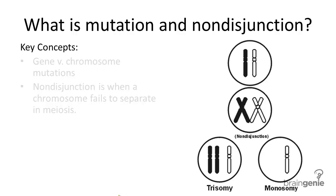Mutations are any abnormalities in a genome and they can disrupt the functioning of a cell or even an entire organism. There are two types of mutations: gene mutations and chromosome mutations. Any change in the DNA sequence is considered a gene mutation. We have another video that explains all the different gene mutations in more detail, so in this video we'll focus more on chromosome mutations.